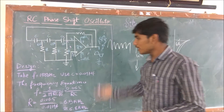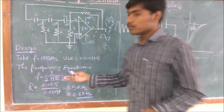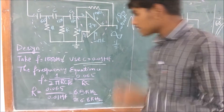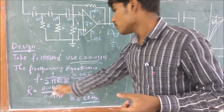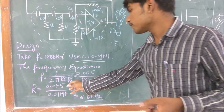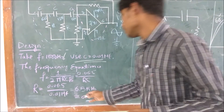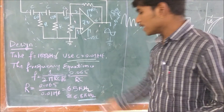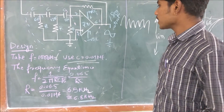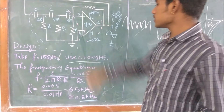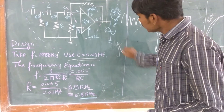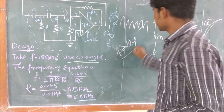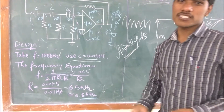Let me show the design for 1 kHz. My capacitor C is 0.01 microfarad. The derived formula for the RC phase shift oscillator is: f = 1 / (2π × RC × √6). From this we get R equal to approximately 6.5 kilohms. We can use 6.8 kilohms or 6.2 kilohms — it's not a big issue. Connect VCC plus and minus VCC. The gain of the RC phase shift amplifier should be greater than or equal to 29 dB to get sufficient oscillation.